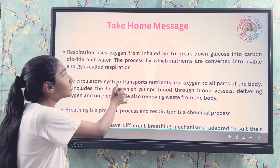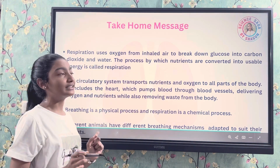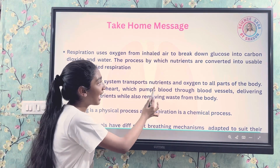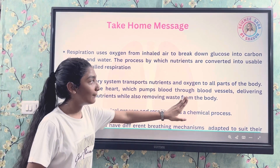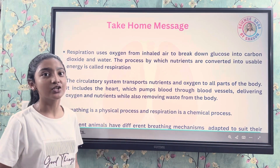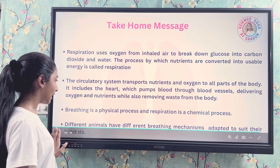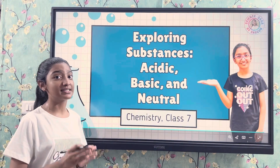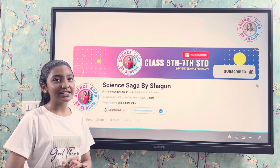Respiration uses oxygen from inhaled air to break down glucose into carbon dioxide and water. The process by which nutrients are converted into usable energy is called respiration. The circulatory system transports nutrients and oxygen to all parts of the body; it includes the heart, which pumps blood through blood vessels delivering oxygen and nutrients while removing waste. Breathing is a physical process while respiration is a biochemical process. Different animals have different breathing mechanisms adapted to their habitat — fish have gills, most land animals have lungs. In the next video we will discuss acids, bases, and neutral substances. I hope you liked today's video — take care and bye bye!